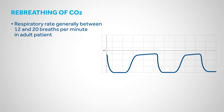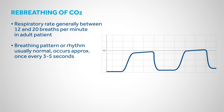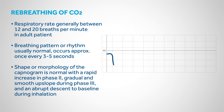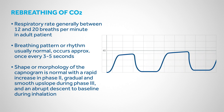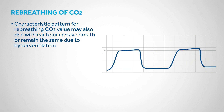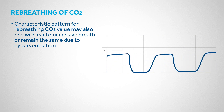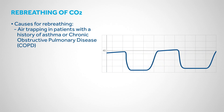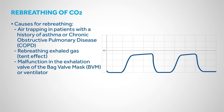In rebreathing of CO2, respiratory rate is generally between 12 and 20 breaths per minute and the rhythm is normal. The capnogram morphology is normal with rapid increase in Phase 2, gradual and smooth upslope during Phase 3, and abrupt descent to baseline during inhalation. The characteristic pattern is an increase or rise in Phase 1 or baseline. The end-tidal CO2 value may also rise with each successive breath or remain the same due to hyperventilation. Potential causes include air trapping in patients with asthma or COPD, rebreathing exhaled gas (the tent effect), or malfunction in the exhalation valve of the bag valve mask or ventilator.